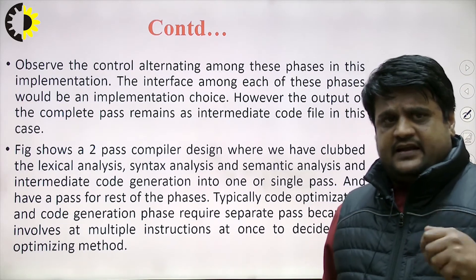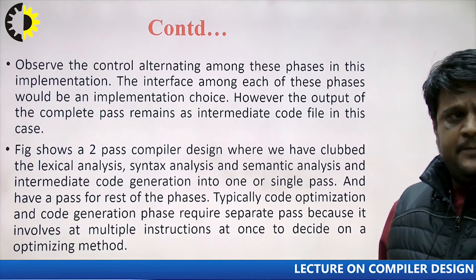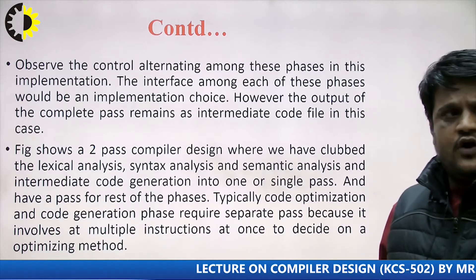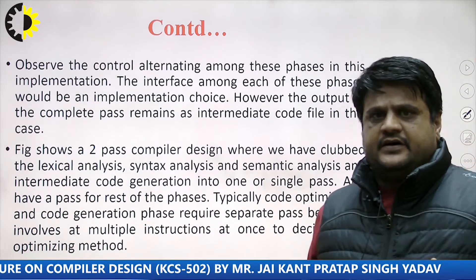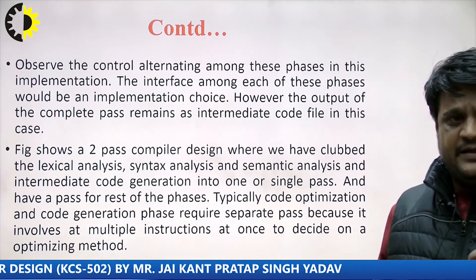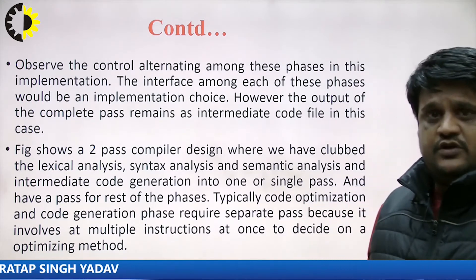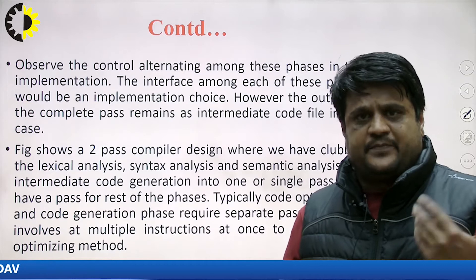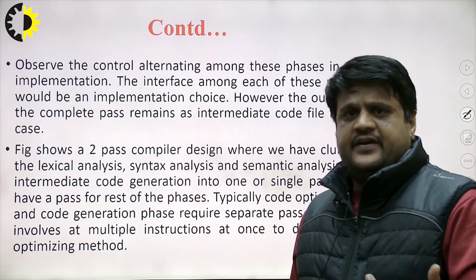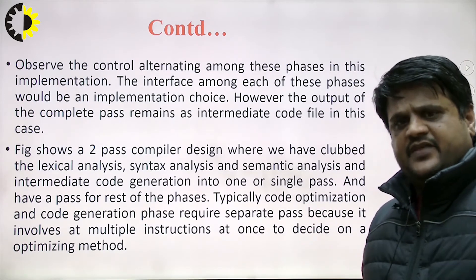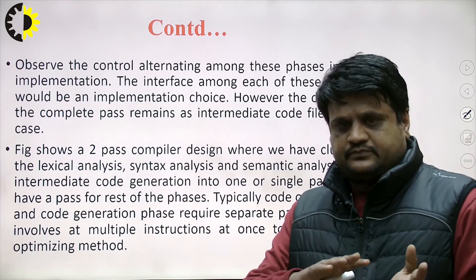Code optimization and code generation phases require a separate pass because in the case of optimization of intermediate code, the entire code is required. To find dead code, unreachable code, etc., it is only possible if we have the entire intermediate code representation of the source program. Due to that, we make code optimization and code generation a different module, separate from the first module of the compiler. That is why it is called a two-pass compiler.